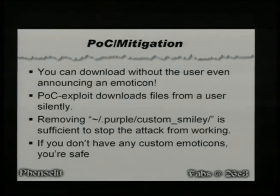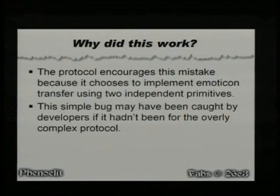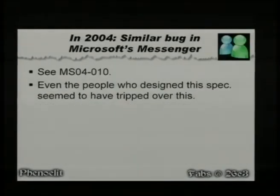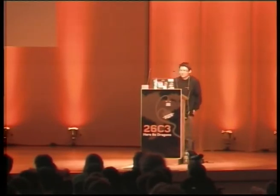Here's a mitigation step for now: you can remove the custom smiley directory, then at least this exploit doesn't work anymore. Why did this work? I don't really think this is just an implementation issue — this is really about a broken protocol. A protocol which is so complicated even though it does something so simple, using encoding schemes where it shouldn't, and you kind of miss the bug because all you see is base64-encoded stuff. Interestingly, Microsoft actually messed this up as well in 2004.